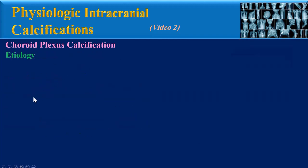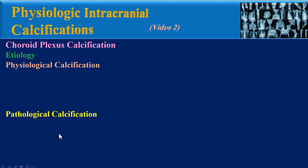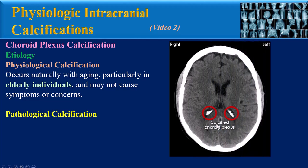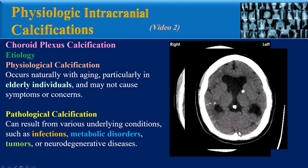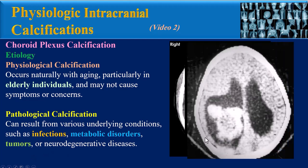What is the etiology of choroid plexus calcification? We can classify etiology into two groups: physiological calcification and pathological calcification. Physiological calcification occurs naturally with aging, particularly in elderly individuals, and may not cause symptoms or concerns. Pathological calcification can result from various underlying conditions such as infections and metabolic disorders. This axial CT image relates to a patient with Sturge-Weber disease, showing gyriform cortical calcification with ipsilateral atrophy and enlarged choroid plexus. It may also be seen in choroid plexus tumors, such as this patient with choroid plexus carcinoma, or neurodegenerative diseases.